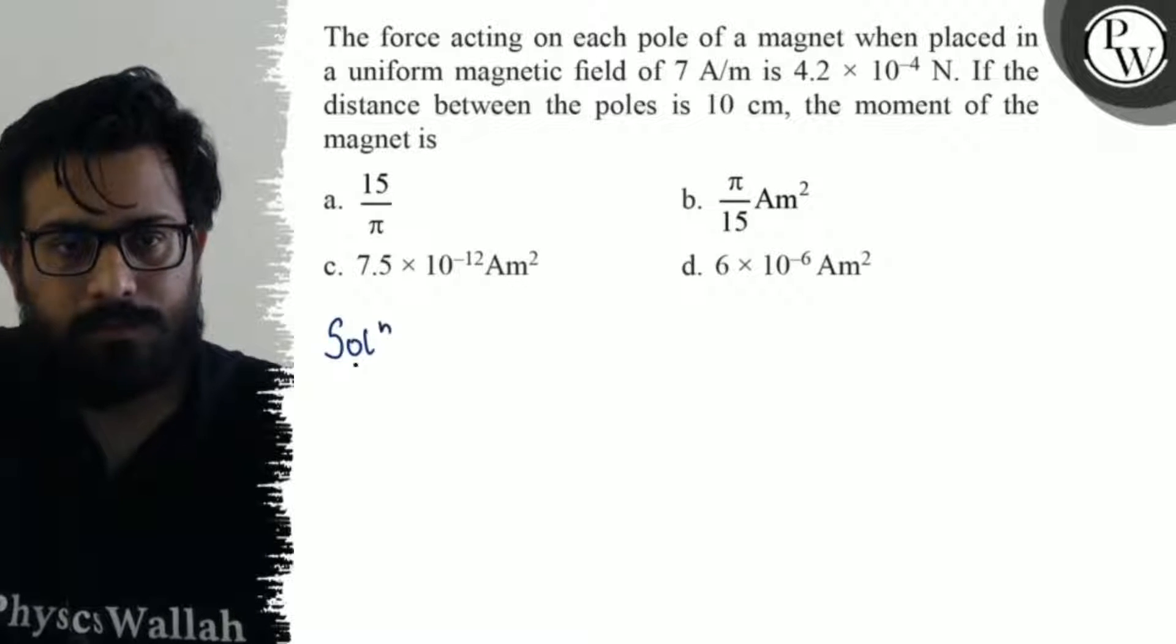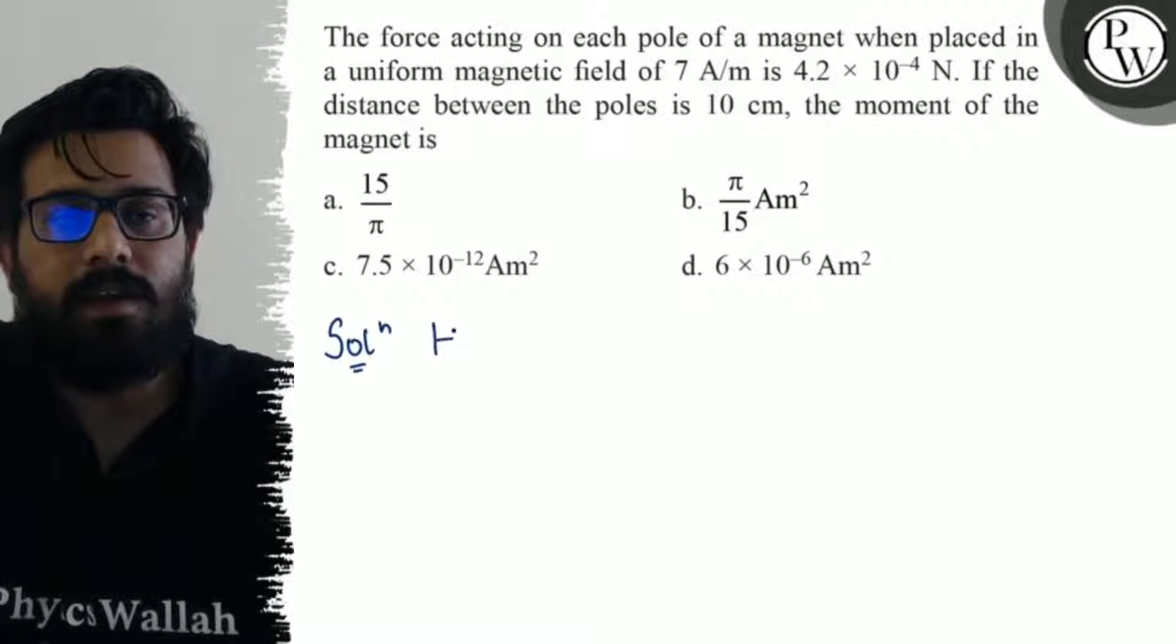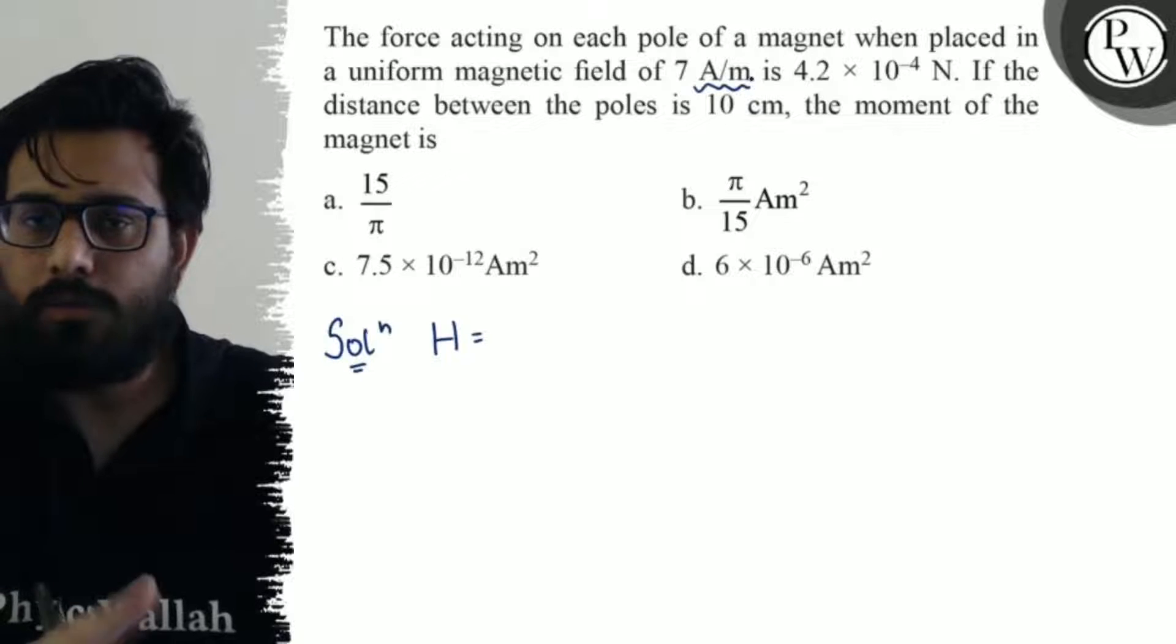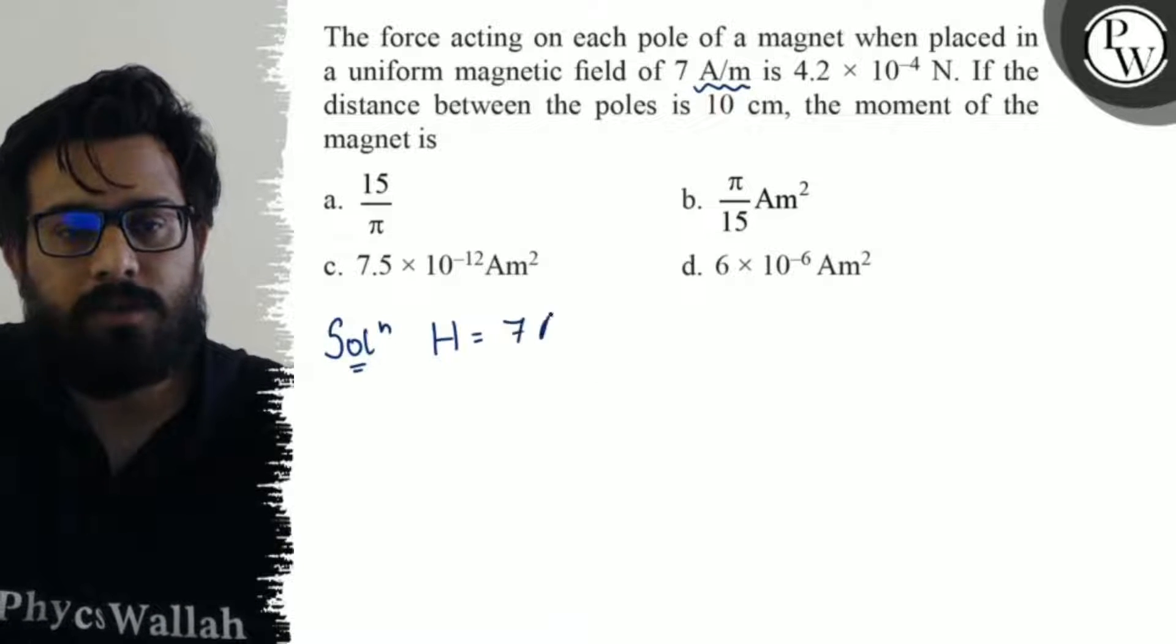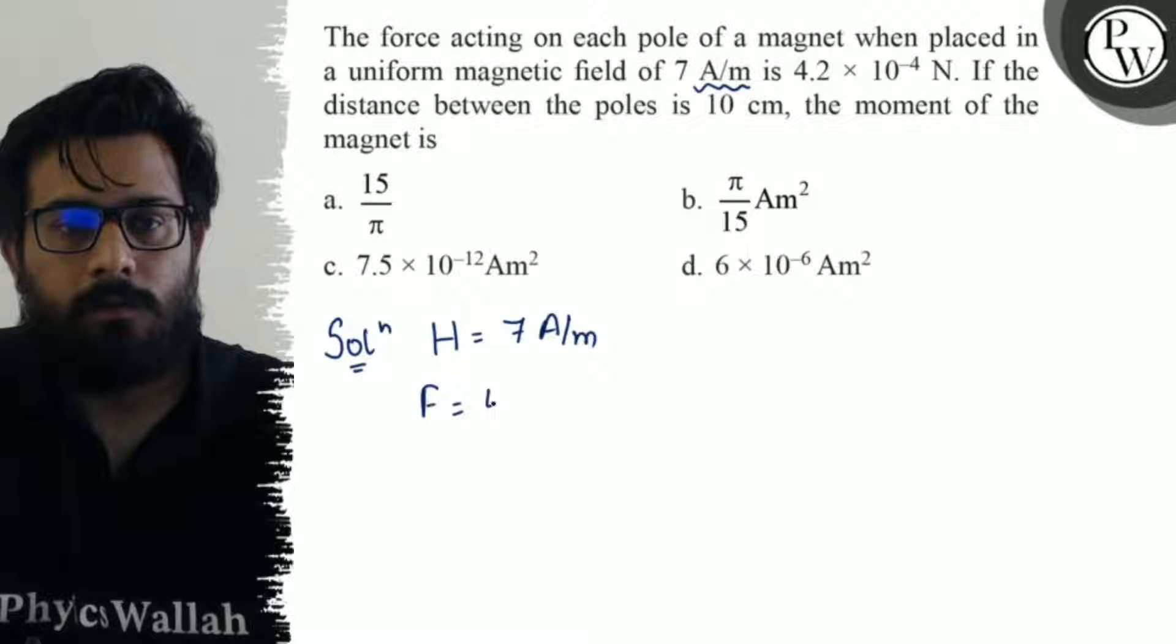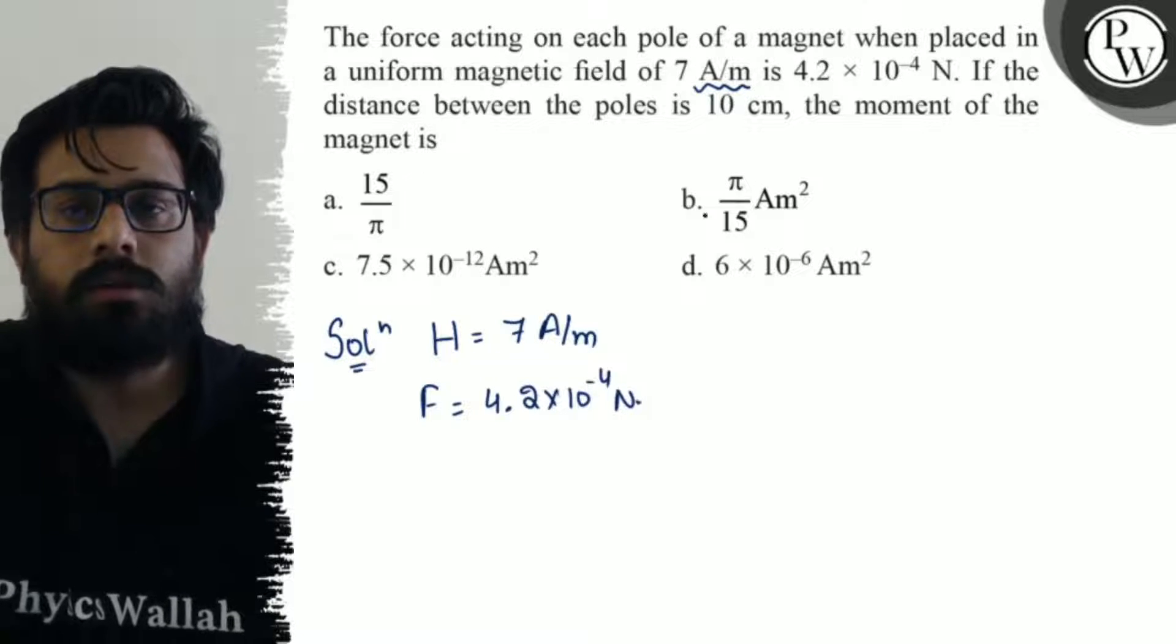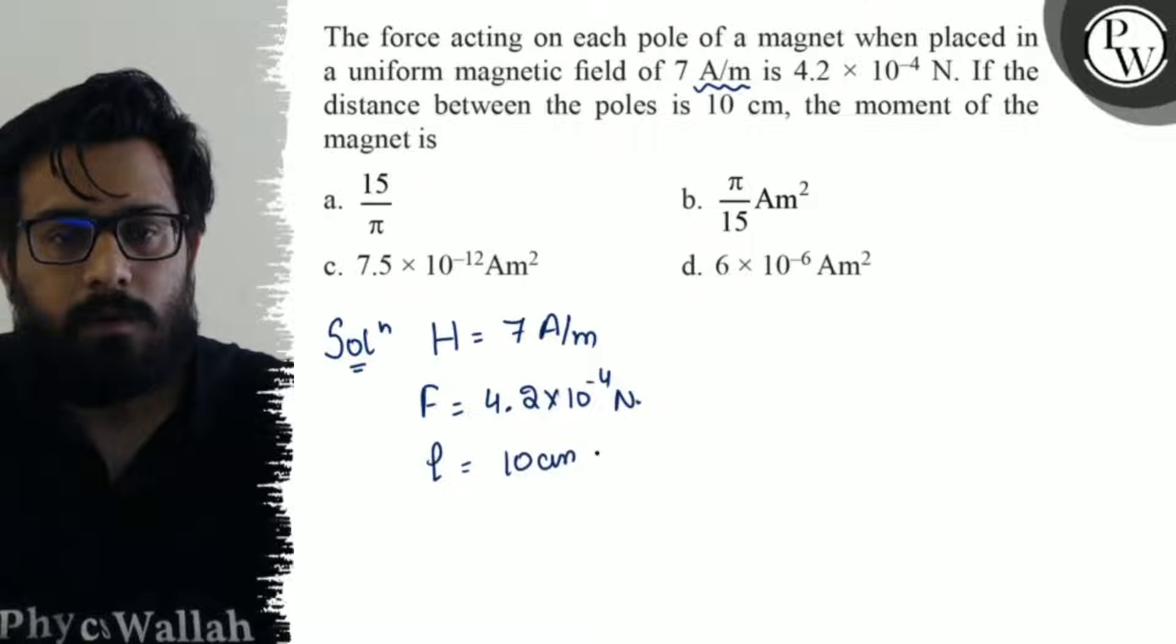So here in this question, what are the given data? We have the value of magnetizing field H, so the unit is ampere per meter. So it comes to be 7 ampere per meter. Force F is 4.2 into 10 to the power minus 4 Newton. The distance between the poles l is 10 centimeter, which can be written as 0.1 meter.